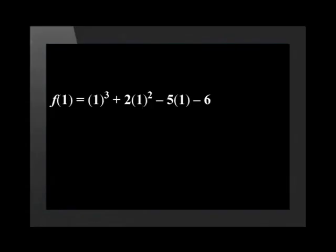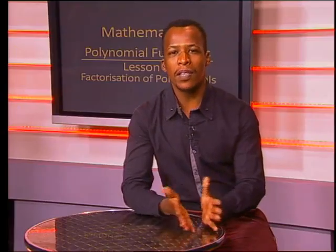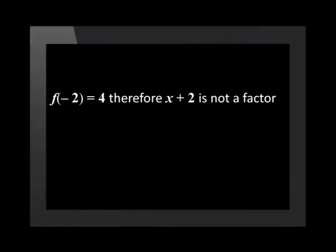Let's try this together. Trying x equals 1: f of 1 equals 1 cubed plus 2 multiplied by 1 squared minus 5 multiplied by 1 minus 6, which equals negative 8. Therefore, x minus 1 is not a factor. f of negative 2 is 4, so x plus 2 is not a factor. f of 2 is 0, so x minus 2 is a factor of the expression.